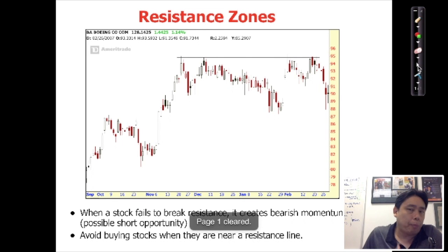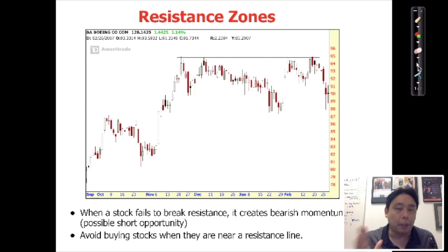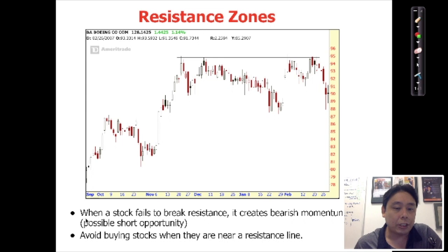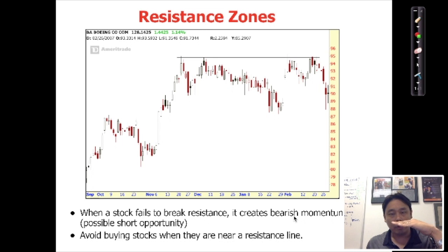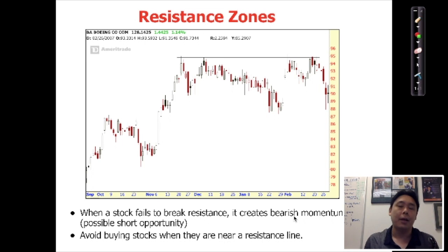In this video, we're going to practice drawing these lines on charts in a short while. Here's the concept: whenever a stock fails to break a resistance, it creates bearish momentum. Whenever there's a resistance level and the price is not able to break through it, it will turn bearish and tend to come all the way back down again. It's kind of like you jumping up and your head hits the ceiling — you bounce back down.